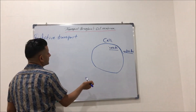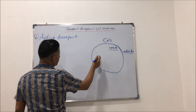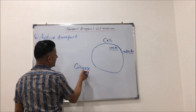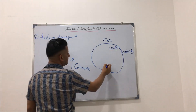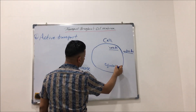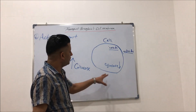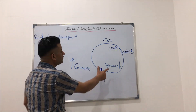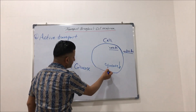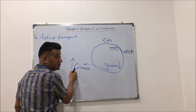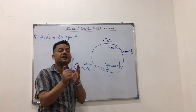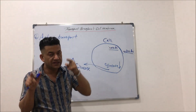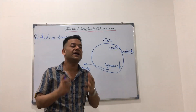For example, if the concentration of glucose outside the cell is high and inside the cell is low, in order to transport glucose from inside of the cell to outside, glucose must be transported against its high concentration. So any substance or ion transported against its high concentration is called active transport.